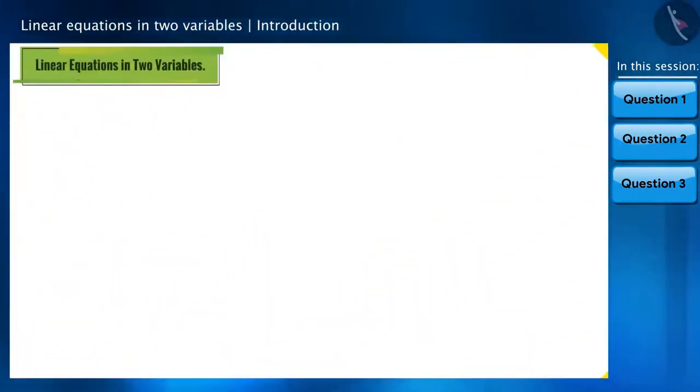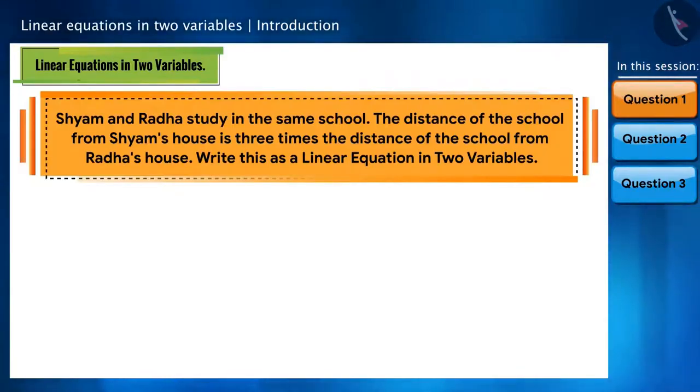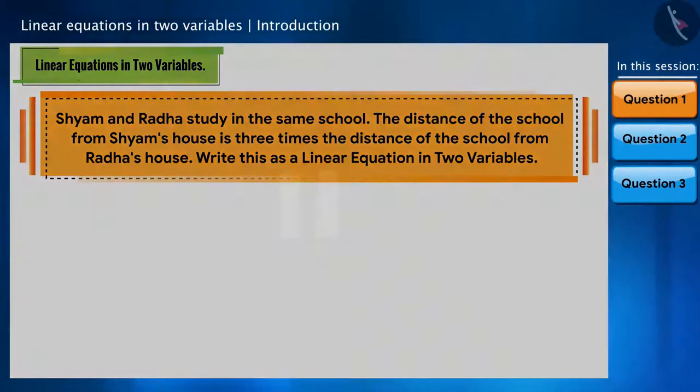Let's start with the first question. Shyam and Radha study in the same school. The distance of the school from Shyam's house is three times the distance from Radha's house. Represent this as a linear equation in two variables. You can pause this video to think.